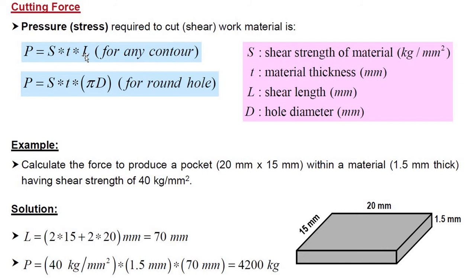Let's take a small example. Here we can see a rectangular block or plate having 20 mm length and 15 mm width with thickness 1.5 mm. We have to calculate the force to produce a pocket of this size in a material having thickness 1.5 mm and shear strength 40 kg per mm square.